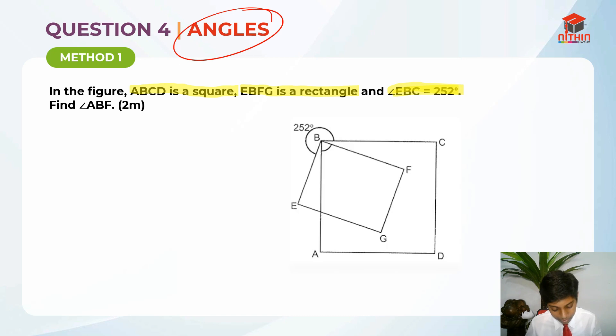First we should know the properties of a square. The square has all equal sides, and the square has 90 degrees angles on each of its sides. And then, what properties does the rectangle have? The properties of a rectangle, the rectangle has a length and a breadth, and the lengths of the rectangles are the same, and the breadths of the rectangles are the same, and the rectangle has all the sides of 90 degrees angles.